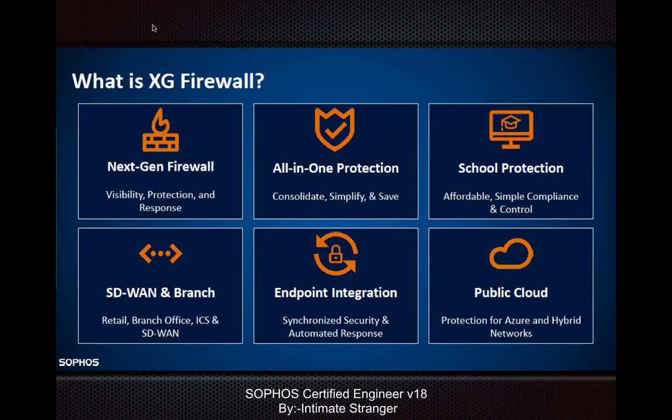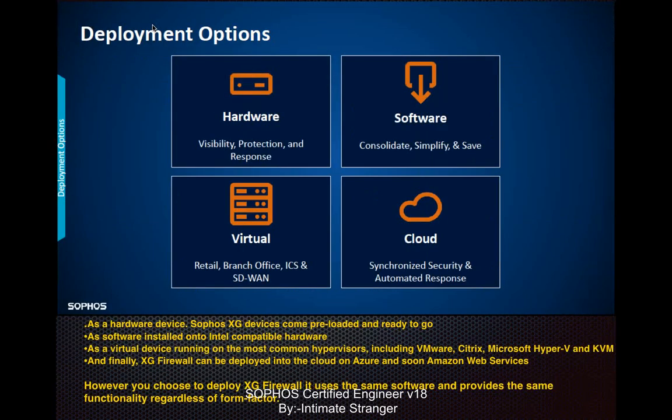People already working in infrastructure prefer to use hardware models. Those who are just learning and don't have access to hardware will work on virtual machines such as VMware or Hyper-V. The Sophos firewall can be deployed in four ways: hardware, which gives more visibility, protection, and response; software on virtual machines; and finally the cloud. Hardware XG devices come pre-loaded and ready to go - you just plug in and start configuring.